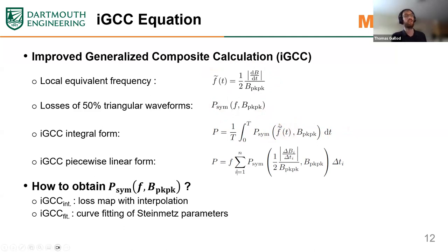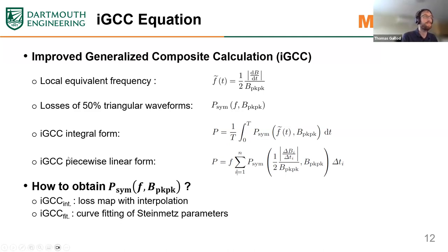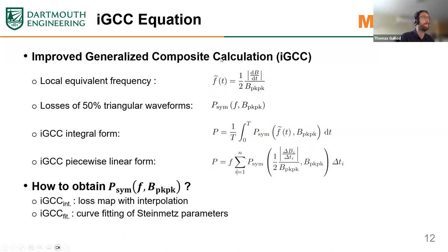Equation-based models often involve integrals and derivatives. If the signal is piecewise linear — for example triangular or trapezoidal — the integral can be decomposed into a summation. The IGCC model depends on knowing losses of symmetric triangular signals, which you can determine by interpolation or curve fitting. Interpolation directly uses symmetric triangular waveforms at different frequencies and flux densities from the dataset — the advantage is simplicity and accuracy, but you need a large dataset. This is typically done by triangulation of all points and interpolating in log scale to get losses for every combination of frequency and flux density.